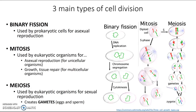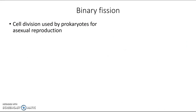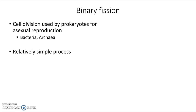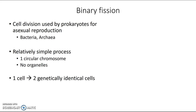So let's take a closer look at binary fission. Again, this is the cell division used by prokaryotes for asexual reproduction. Remember, those are the organisms in the domains bacteria and archaea. They're relatively simple critters, so this is a relatively simple process. They only have one circular chromosome and no organelles to worry about, so there's not a lot that goes into it. In this process, one cell will give rise to two genetically identical cells.